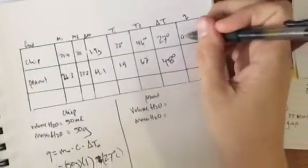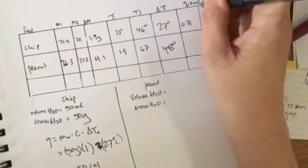So let's look at the peanut. We're gonna put that right here, 0.71 kilocalories per gram.